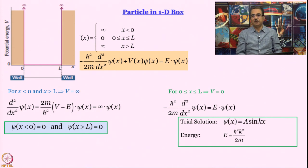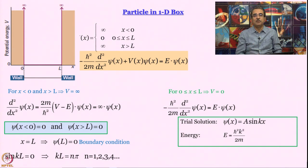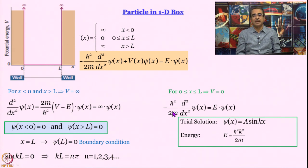We now have the simpler solution ψ(x) = A·sin(kx). At the other boundary x = L, the wave function must also be 0 for continuity. So A·sin(kL) = 0, meaning sin(kL) = 0. This requires kL = nπ, where n = 1, 2, 3, 4, and so on. We do not take negative values of n because they do not add any new information.